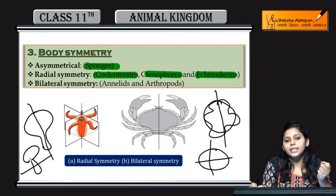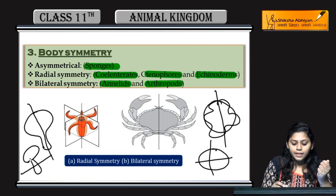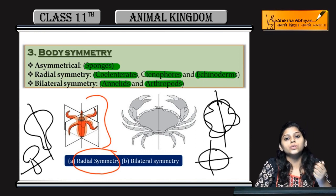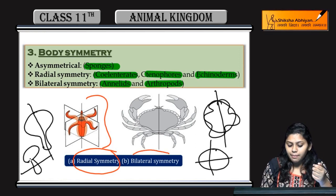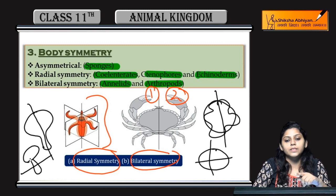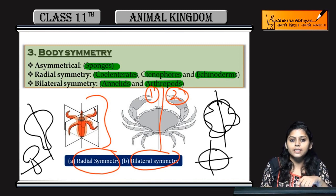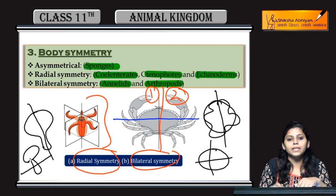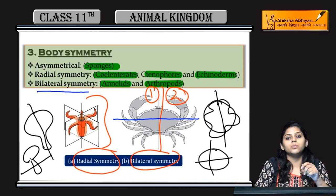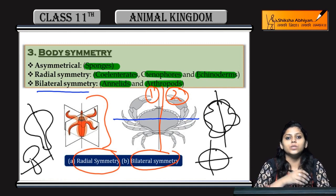Radial symmetry show karte hain coelenterates, ctenophores, and echinoderms. Bilateral symmetry show karte hain annelids aur arthropods. Yahan pe diagram mein radial symmetry show ki hai — jisme agar aap kisi bhi plane se cut karo to equal halves milenge. Aur bilateral symmetry mein sirf ek hi plane mein cut karne par equal halves milenge. Agar aap is organism ko is plane mein cut do to upar wala aur neeche wala equal nahi hoga — mean sirf ek plane mein equal halves mile hain to use bilateral symmetry bolenge. Agar koi bhi equal half nahi milega to asymmetrical bolenge.